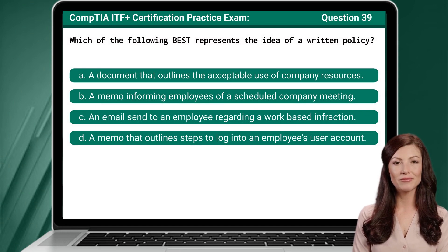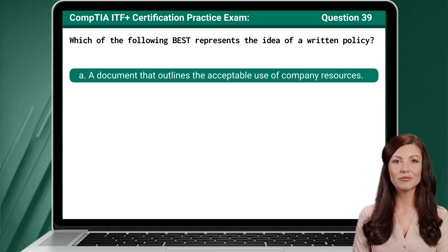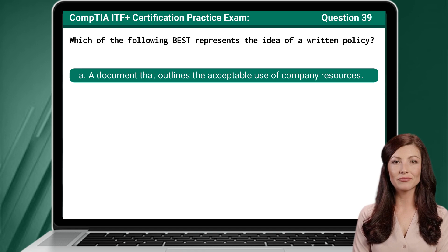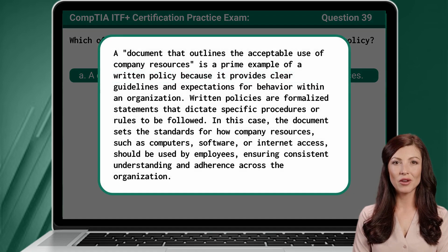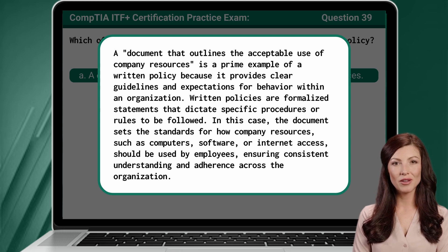Question 39. Which of the following best represents the idea of a written policy? A document that outlines the acceptable use of company resources is a prime example of a written policy because it provides clear guidelines and expectations for behavior within an organization.